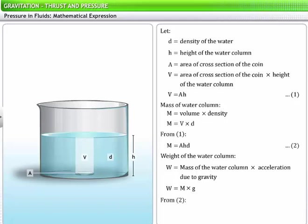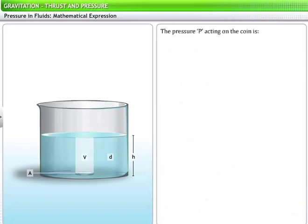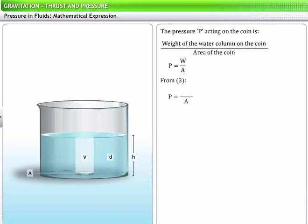Substituting equation 2 here, you get equation 3. Weight of the water column acts normally on the object. Thus the pressure P acting on the coin is the ratio of weight of the water column to the area of the coin. That is, P is equal to W divided by A. From equation 3 we know W is equal to product of A, H, D, and G. This gives the expression of fluid pressure P: P is equal to HDG, where H is equal to height of the water column, D is equal to density of the water, and G is equal to acceleration due to gravity.